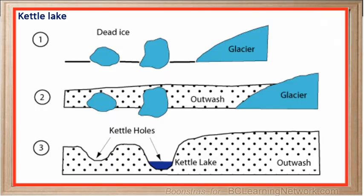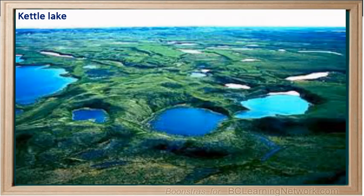A kettle lake is formed when a sizable chunk of the main glacier breaks off and is buried under till from the main glacier. The till is a mixture of finely ground rocks, boulders and sand. Underneath the till, the glacial ice melts and creates a depression in the landscape that eventually fills with water to form a lake.